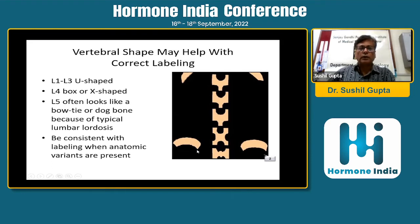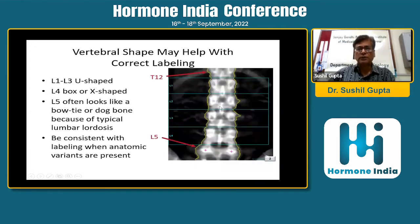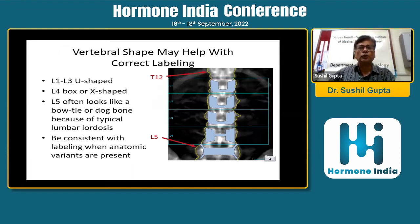We identify vertebrae by their shape on the image. L1 to L3 are U-shaped vertebrae, L4 is box-shaped, and L5 is a bowtie shape. This is important to correctly label vertebrae on images. Looking at such an image, T12 is identified followed by L1, L2, L3, and L4 in sequence. It is not uncommon for technologists to label these vertebrae incorrectly, leading to wrong interpretation.